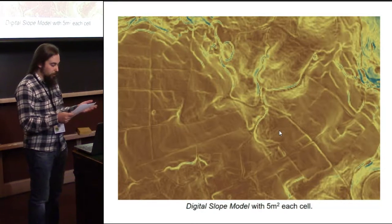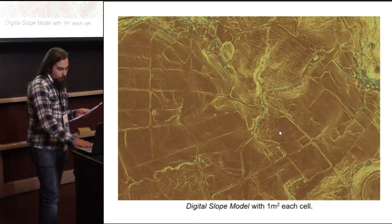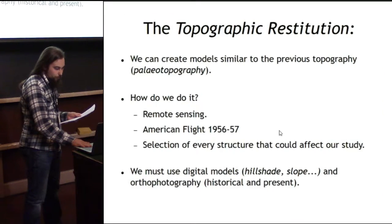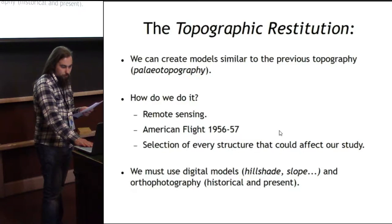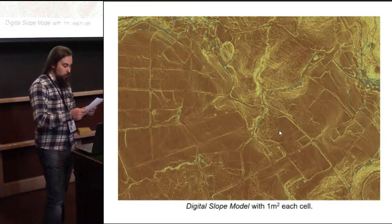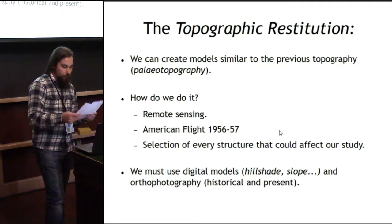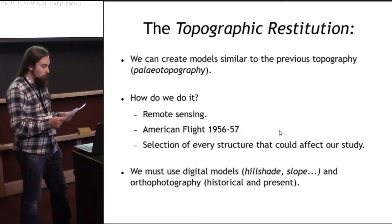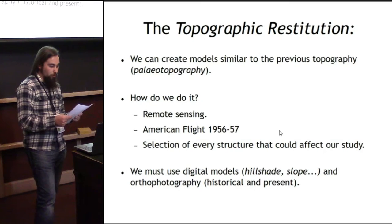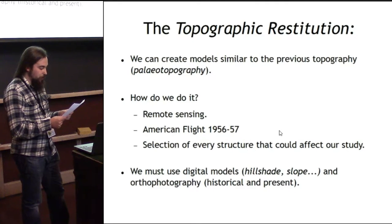It is for that reason that it is necessary to make a topographic restitution. This is the same model of five meters but applying the topographic restitution. As we can see, the digital model of one meter represents all kinds of anthropological alterations on the landscape, most of them the result of the past 50 years of modernization. By applying the topographic restitution, we can generate digital terrain models similar to the previous topography, based at least on the data at our disposal. In order to do it, the first step is to identify what elements we must erase from the point clouds and register them with lines or polygons.